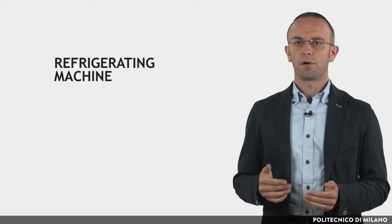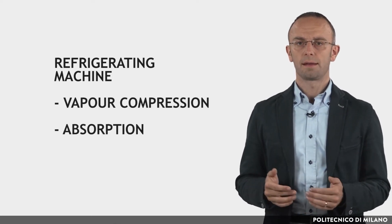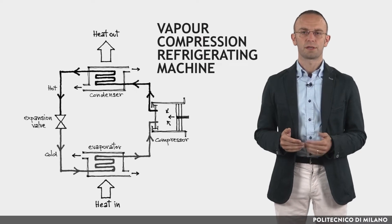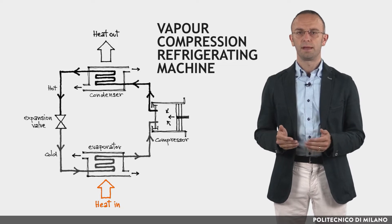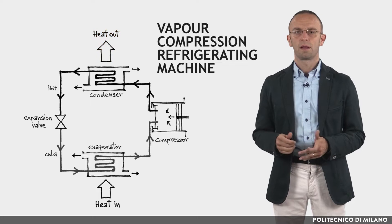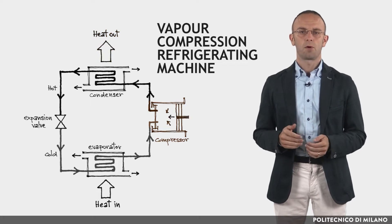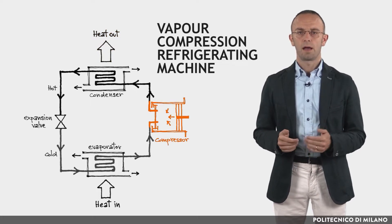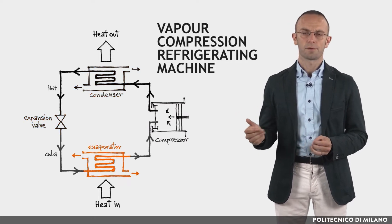There are two main types of refrigerating machine: vapor compression and absorption. Vapor compression refrigerating machines use a refrigerant that absorbs and removes heat from the space to be cooled and subsequently rejects it elsewhere. Such systems have four components: a compressor, a condenser, a thermal expansion valve, and an evaporator.